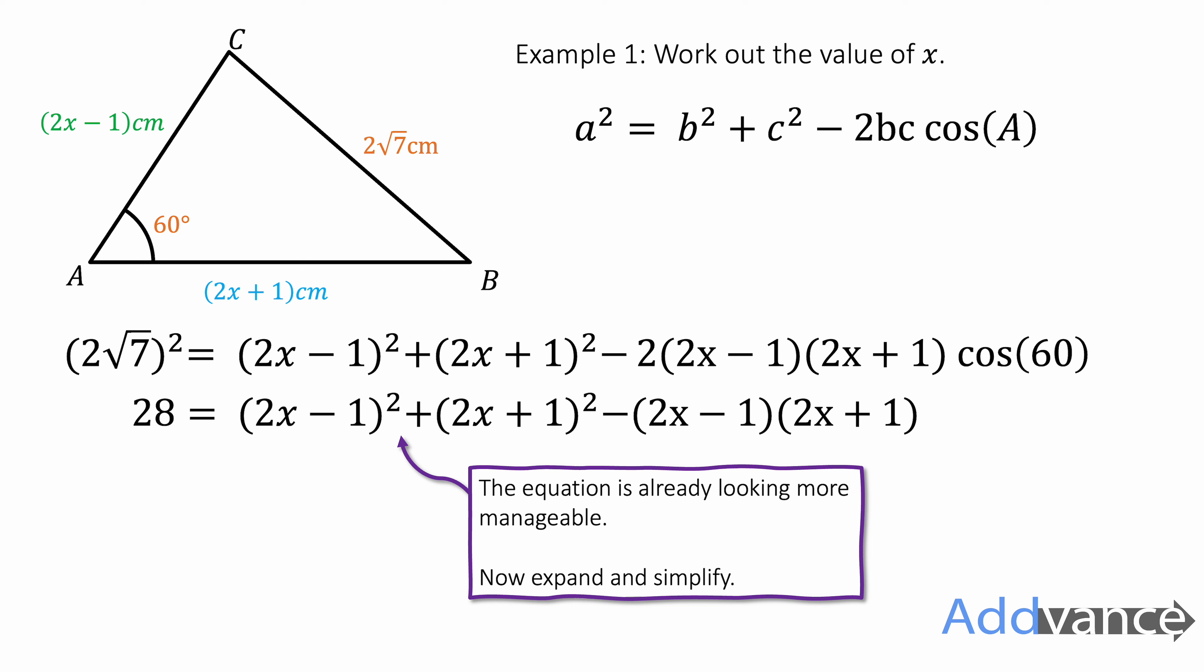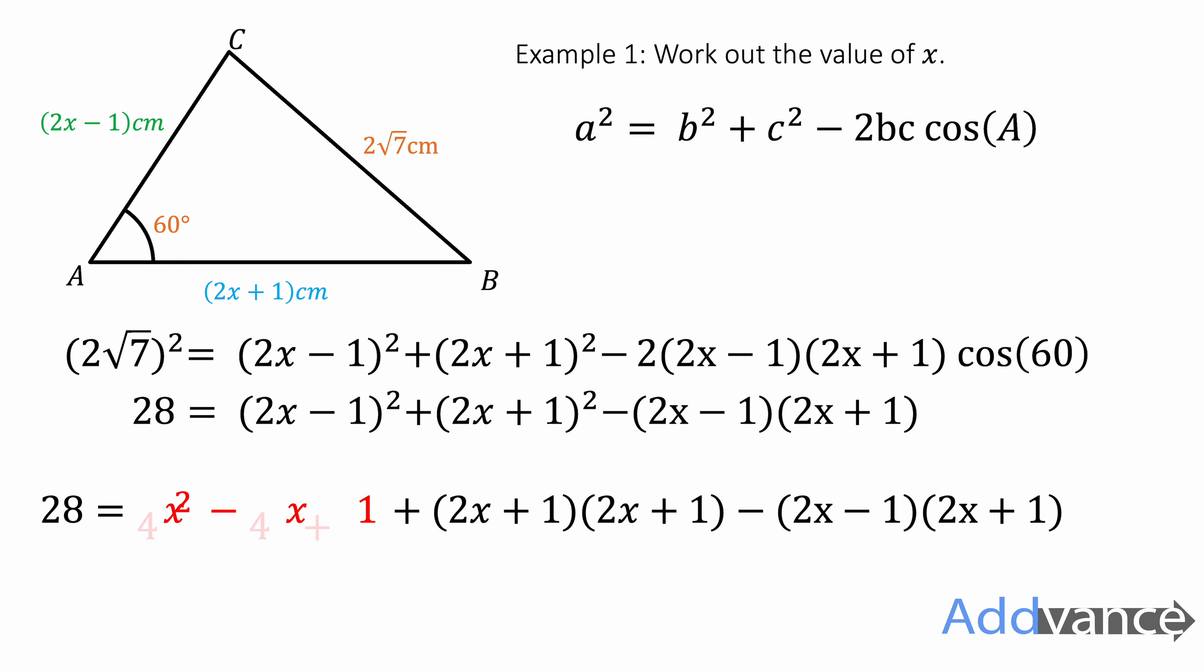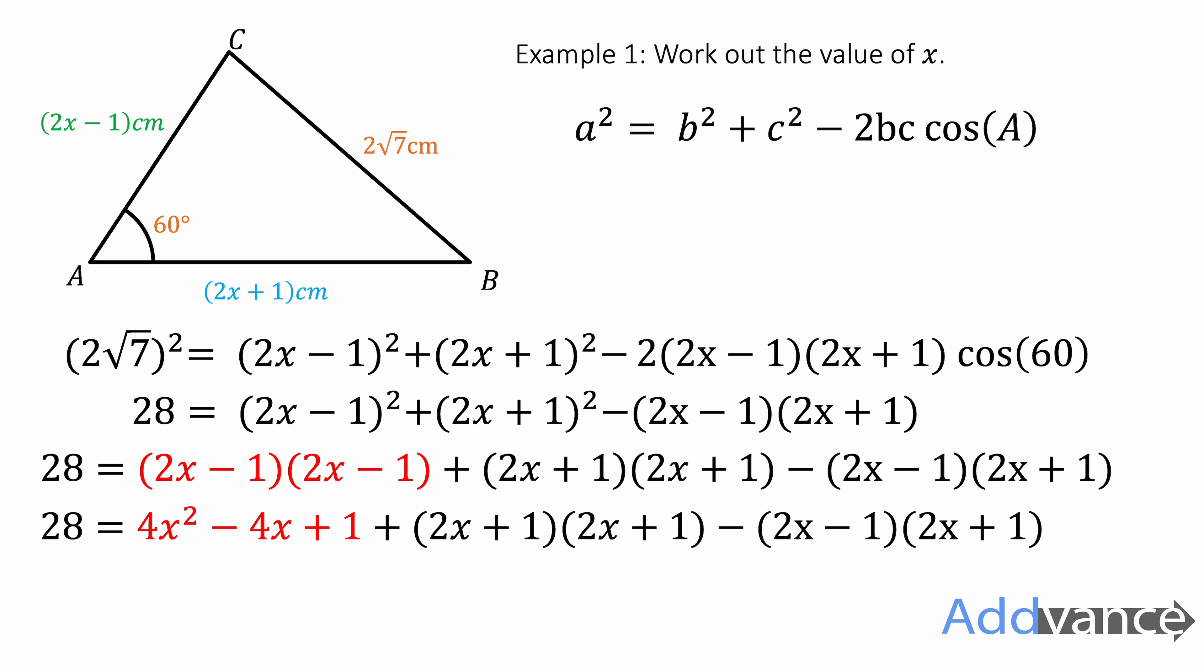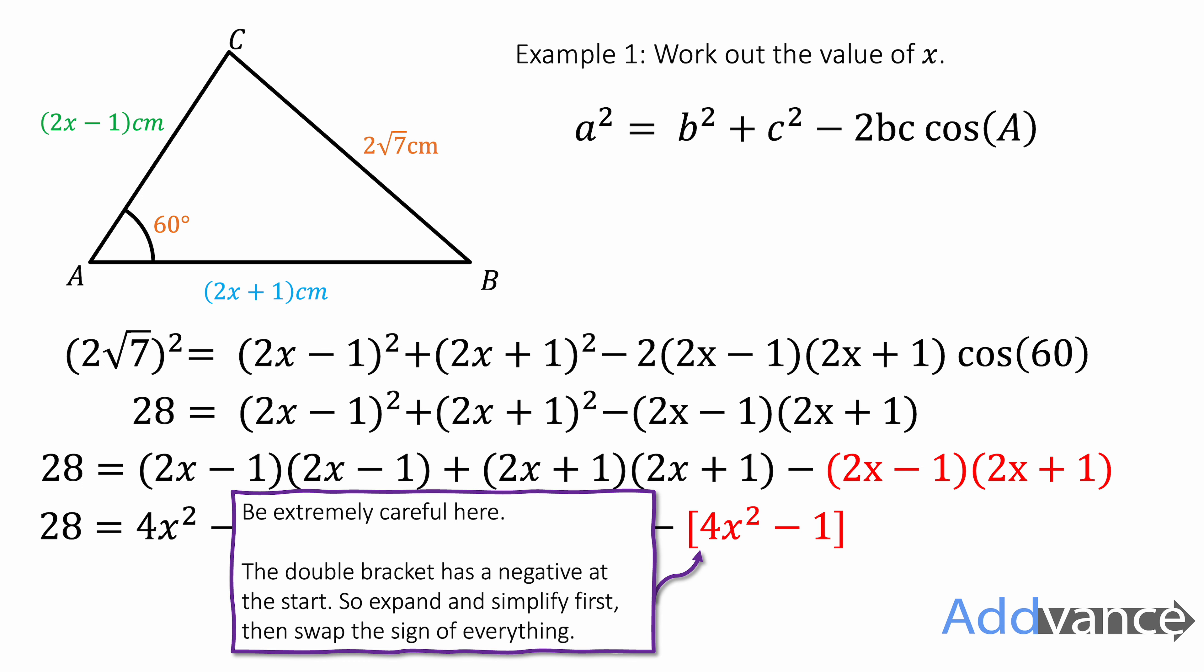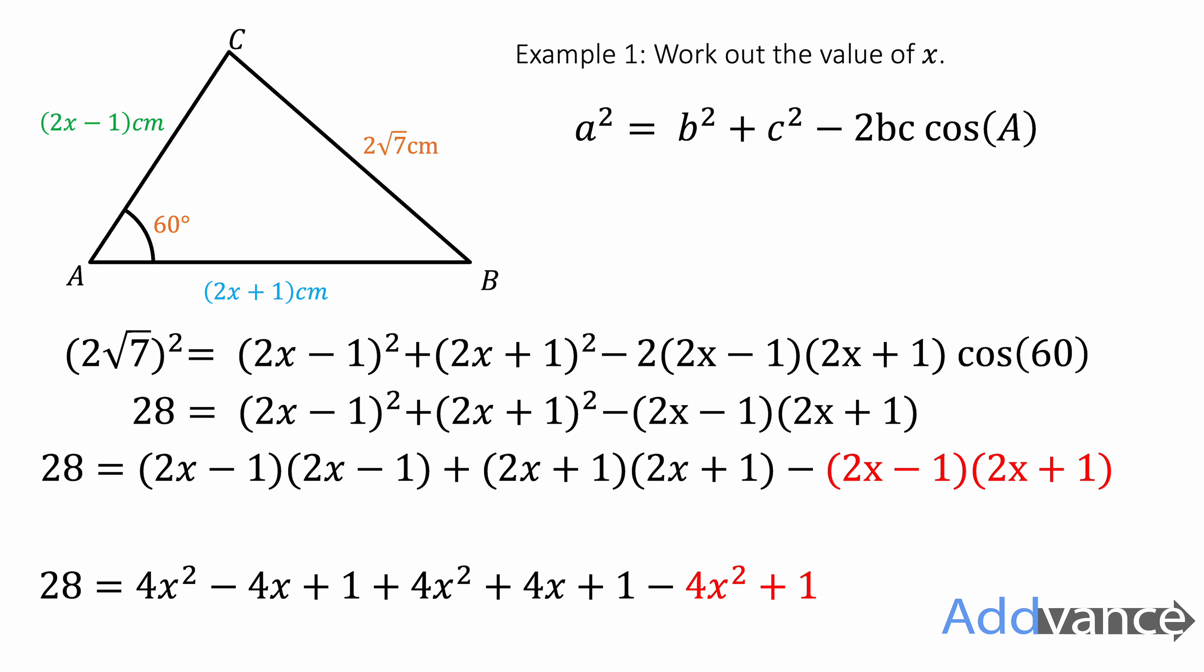And it says 2 times 2x minus 1 times 2x plus 1 times 1 half. So multiplying those brackets by 2 and then halving it, which cancel out. So the 2 and a half cancel and we're left with this. And already the question is looking a lot simpler. So now we're going to expand the brackets. We get the first set of brackets is 4x squared minus 4x plus 1. Then this bracket 2x plus 1 times 2x plus 1 expanded as a double bracket. And the final bracket, we are subtracting the 2x minus 1 times 2x plus 1. And so you have to be really careful when you are subtracting this.